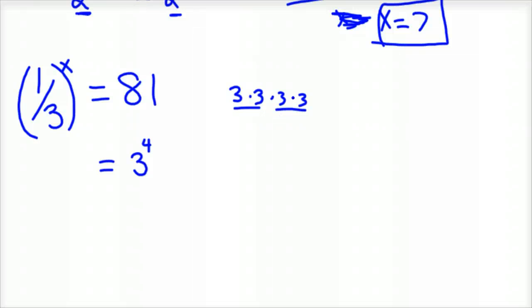Now 1 over 3 to the x power, we need to get that 1/3 so it's a base 3. Right now it's a base 1/3. To make it base 3, 1/3 can be written as 3 to the negative 1 power, then to the x. If you're unsure of that, look up videos on negative exponents. It's not magic, not doing any type of witchcraft, just check that out. Power to power, then, if you know your rules of exponents, that would be 3 to the negative x equals 3 to the 4th.